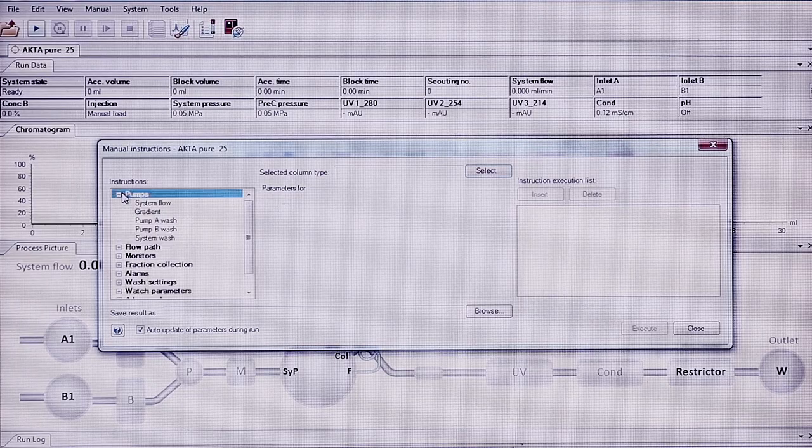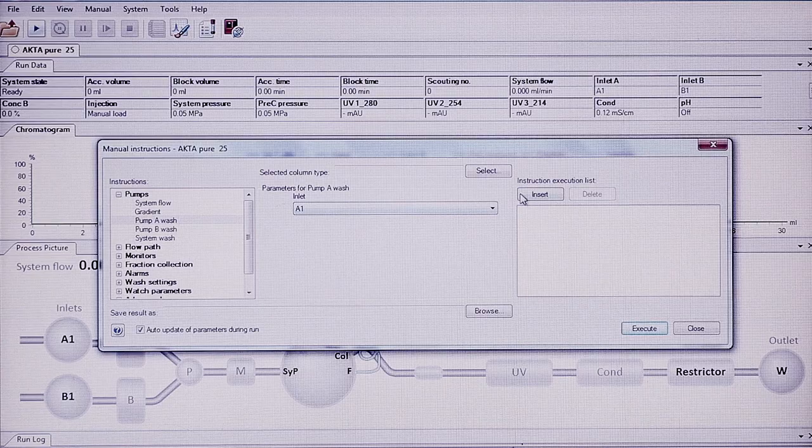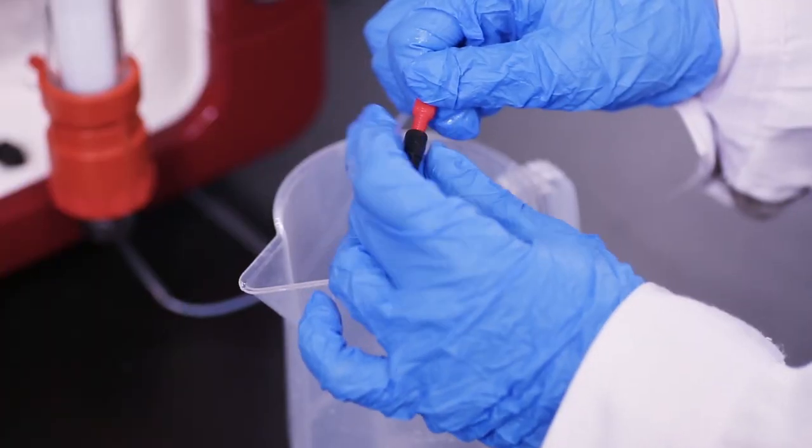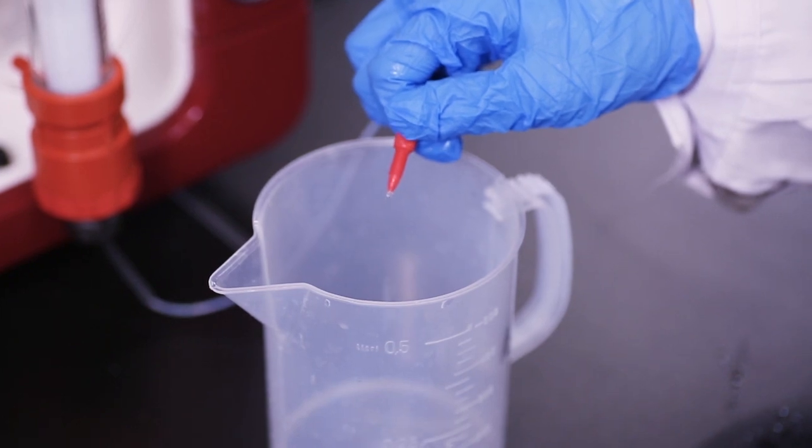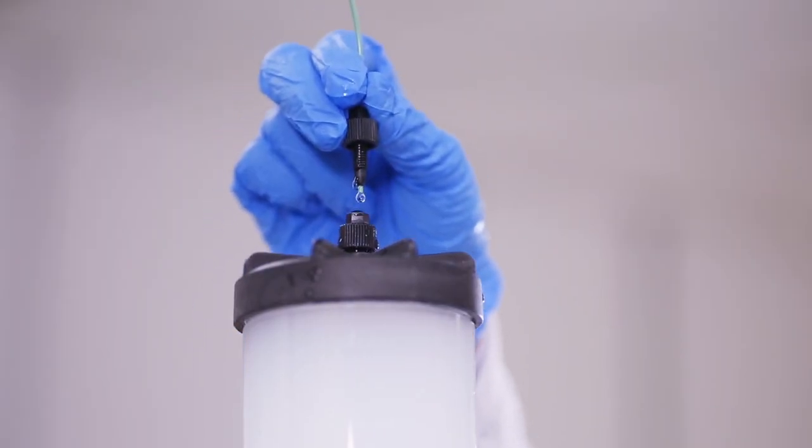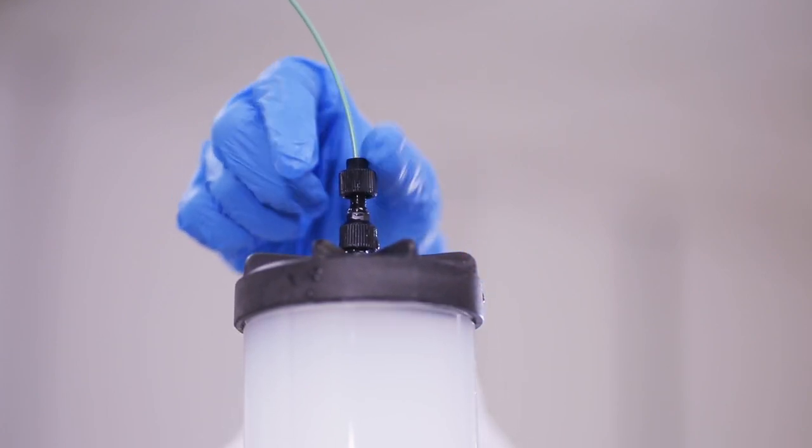Use the pump wash function in Unicorn to remove unwanted air in the system or tubing. Place a beaker for waste under the column and remove the stop plug at the end of the column. Start the pump and attach the tube to the top of the reservoir at low flow rate with a drop-to-drop connection.